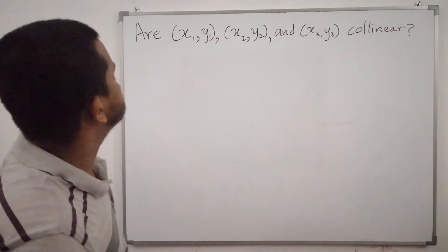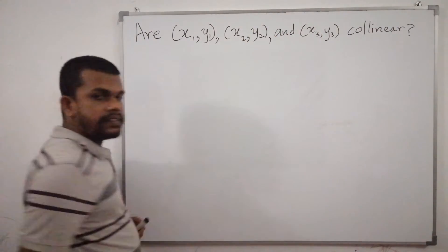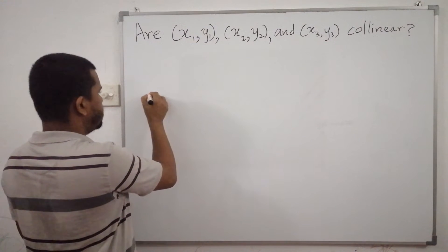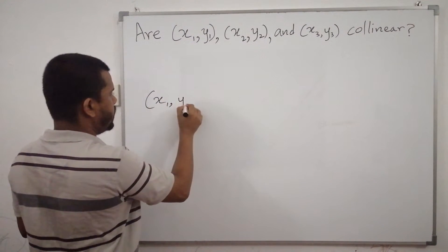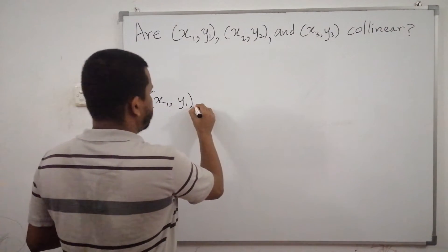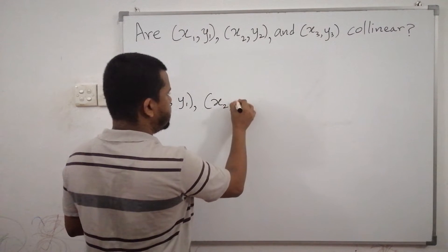Now, let's write down the coordinates of the three points. We write down the three points in a particular order. Let's say it's like this.